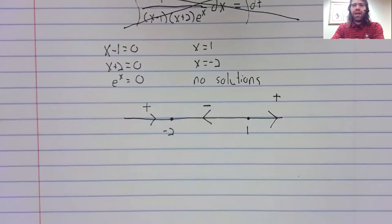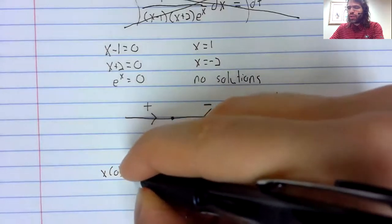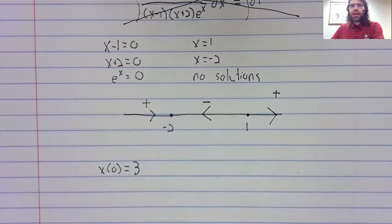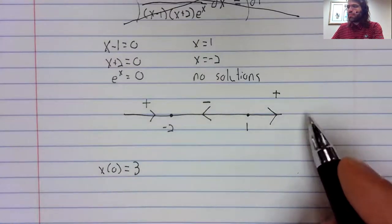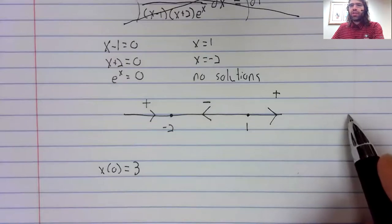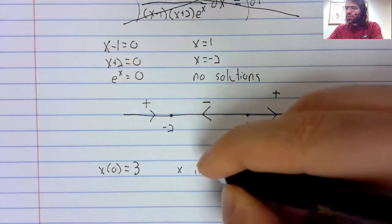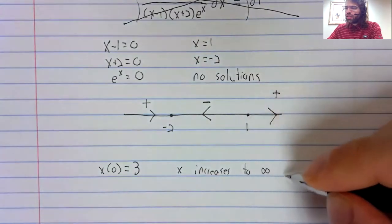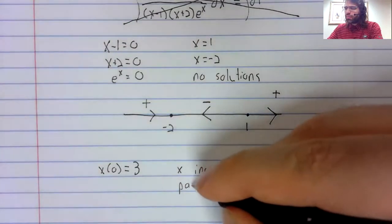Say that we have any initial condition. Say we're told that x of zero equals three. What's going to happen? Well, we start here at three. We see the derivative is positive, so we go to the right. And we keep going to the right forever. x increases to infinity as time passes.